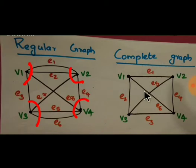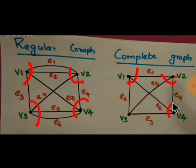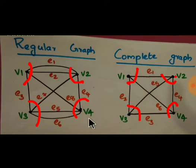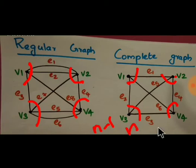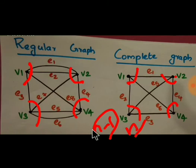How is a complete graph different from a regular graph? In the second graph there are four vertices V1, V2, V3 and V4, and here also all vertices have degree 3, so this graph is also a regular graph. A complete graph means there are n minus 1 number of edges attached to a vertex when there are n number of vertices. So a complete graph is a graph in which when there are n vertices, each vertex has n minus 1 edges.